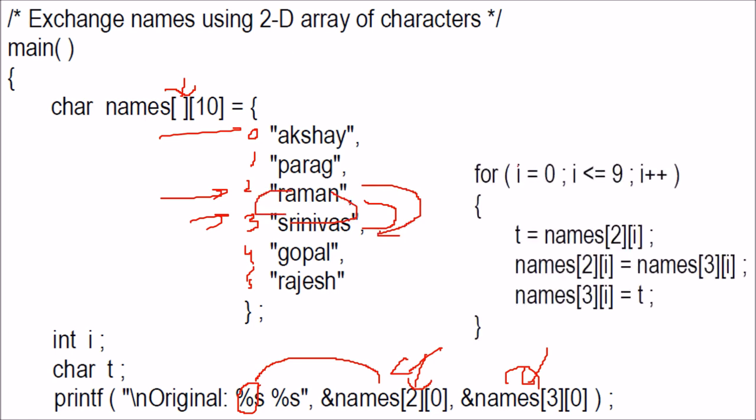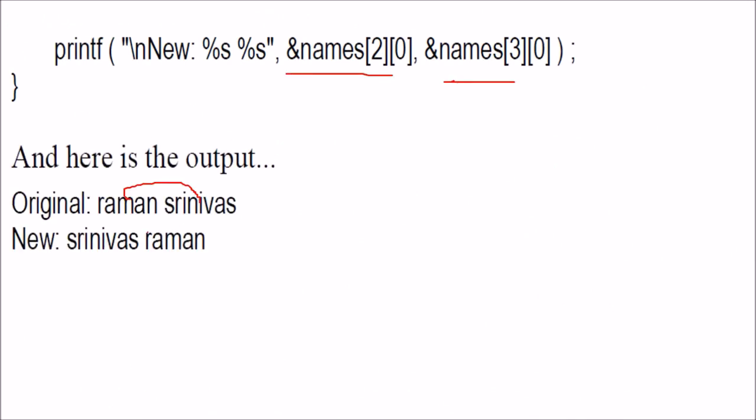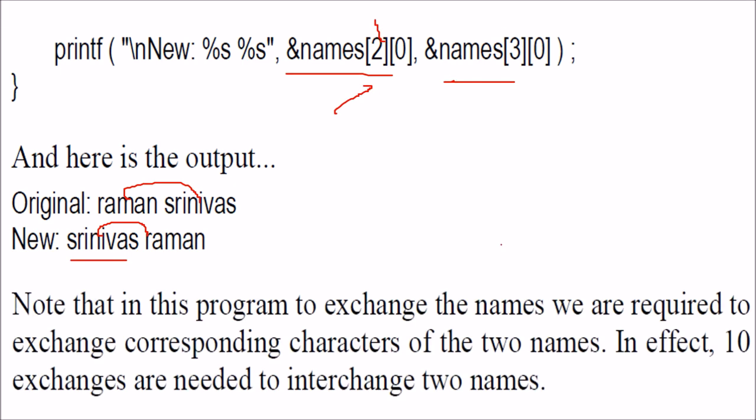Raman goes here, Srinivas goes here. For that what we do? We start with 0 to 9 and every point, we take a temporary variable and transfer the content, means character from one point to another, means R is exchanged with S, S is exchanged with R, A is exchanged to R, R is exchanged to A and likewise. Final result will be the exchange of names, you will see Raman Srinivas and Srinivas Raman at 2, previously it was Raman, now at 2, it will be Srinivas, so they will be exchanged. So this is the exchanging, we are actually transferring or exchanging the proper characters, we are taking one character by one character and exchanging. So 10 exchanges are needed to interchange 2 names, here in this case.